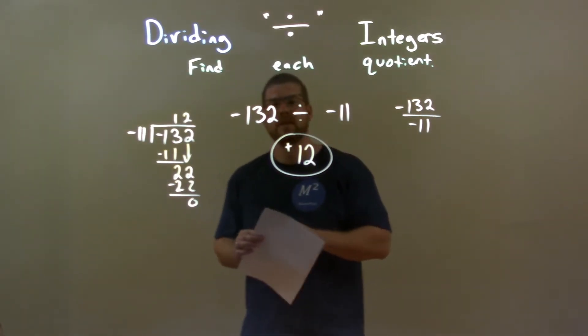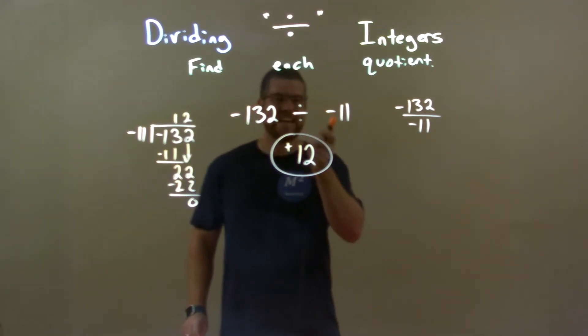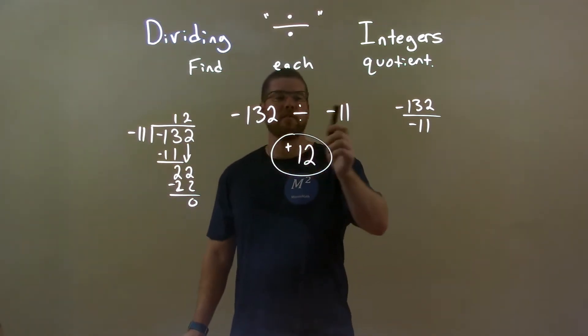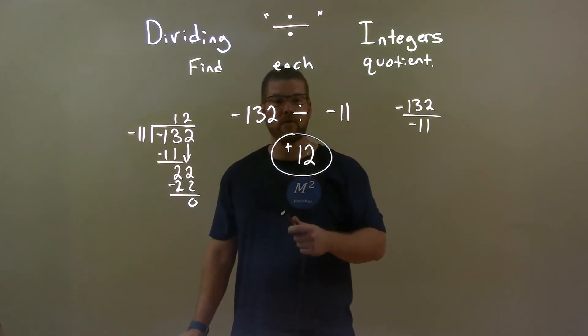So, quick recap. We're given negative 132 divided by negative 11. We know 132 divided by 11, like I showed, was 12 and a negative divided by negative is a positive. So, our final answer here is positive 12.